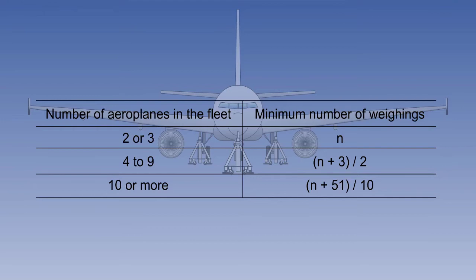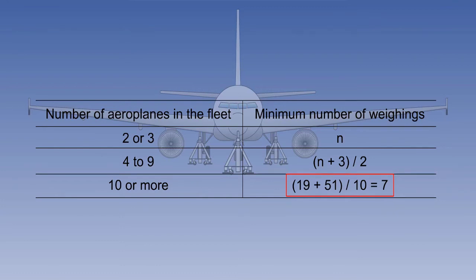On screen you will see a table with two columns: one indicating the number of aeroplanes in the fleet and the other the minimum number of weighings. The letter N in the table represents the number of aeroplanes in the fleet using fleet values. In this example, the number in the fleet N is 19 which, when added to 51, equals 70. Dividing by 10 will result in a minimum number of seven weighings required to establish fleet value.